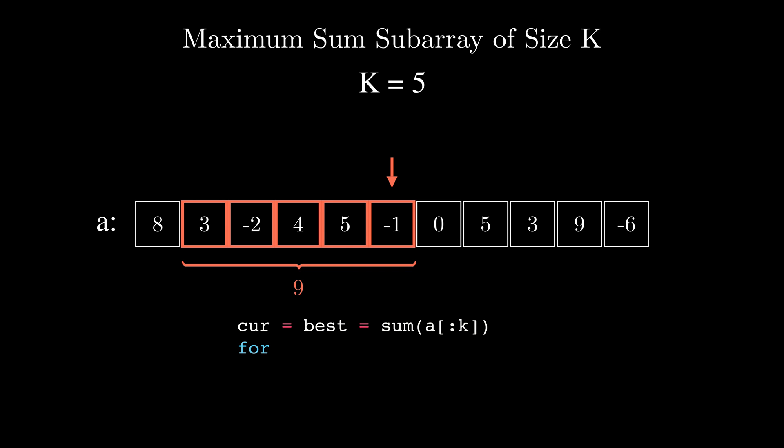We then iterate over all the endpoints starting from k and going up to the end of the array and update the current sum by adding the new value that entered the window and subtracting the value that just got out of the current window. Each iteration updates the current best sum to keep track of it.